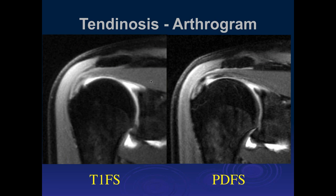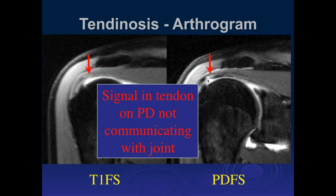Here is tendinosis in someone who had an arthrogram. One thing to be aware of is that when you get tendinosis, you have very friable tissue that tends to absorb contrast from either IV or arthrographic injection. So tendinotic tendons can enhance with contrast and imbibe it — as we can see here with the increased signal intensity within the supraspinatus tendon.